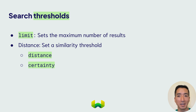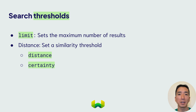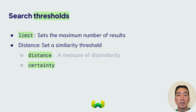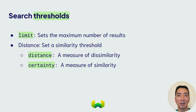We'll cover more on these later, like different metrics and how they're calculated, but the key thing to remember for now is that distance is a measure of dissimilarity, so a lower distance is more similar, while certainty is a measure of similarity, so a higher number means higher similarity.